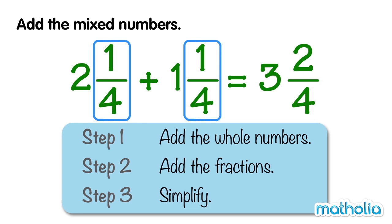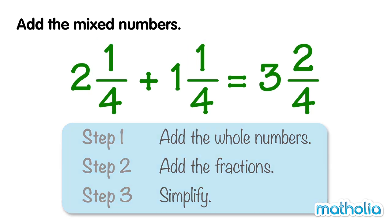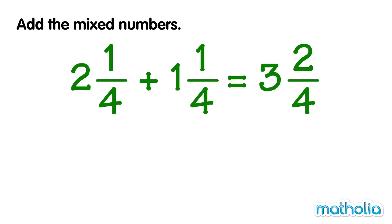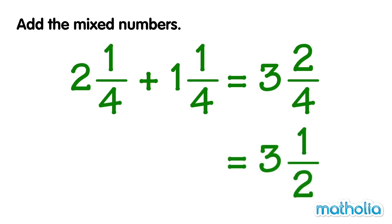Step 3: Simplify. Check if the fraction part of the mixed number can be simplified. 2 quarters is equal to 1 half. So 2 and 1 quarter plus 1 and 1 quarter equals 3 and a half.